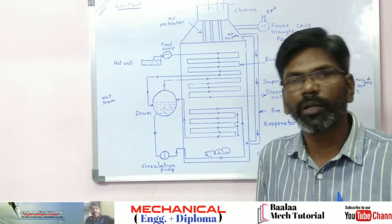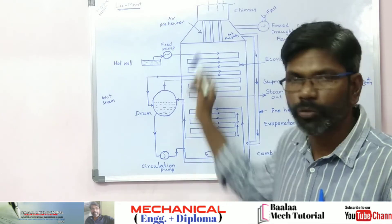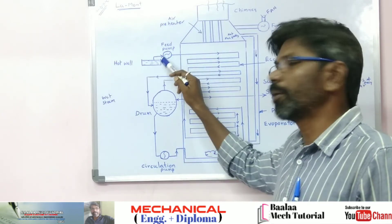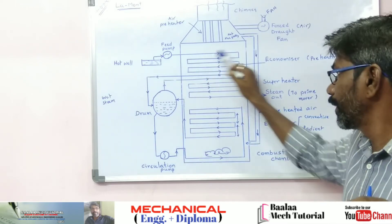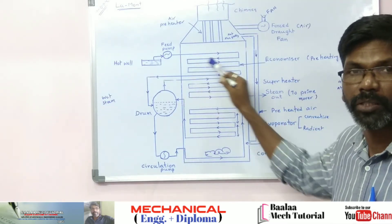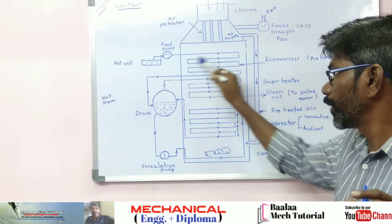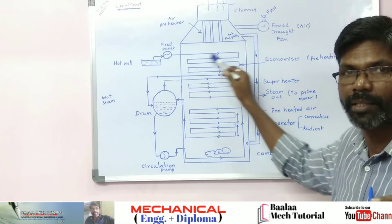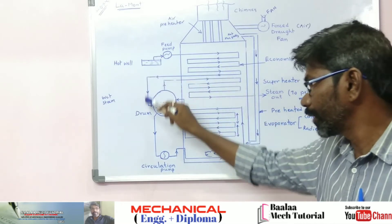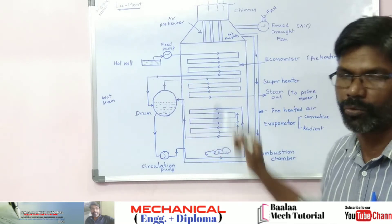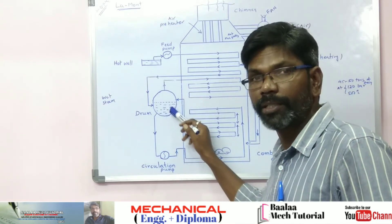First, the feed water is already heated water. This heated water is fed through the feed pump. Water is circulated through this section. Here is the feed water pre-heating process. The pre-heated water goes directly from the drum, and this drum is supplied with preheated water.